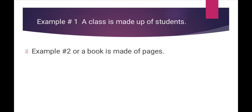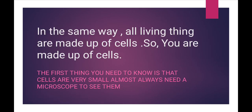Jaise ke, our class is made up of students – a class is only called a class when students are present inside it. Similarly, example number 2: a book is made up of pages. If we join many pages together, they form a book. In the same way, all living things are made up of cells – har jandar cells se, khaliyat se bana hai.